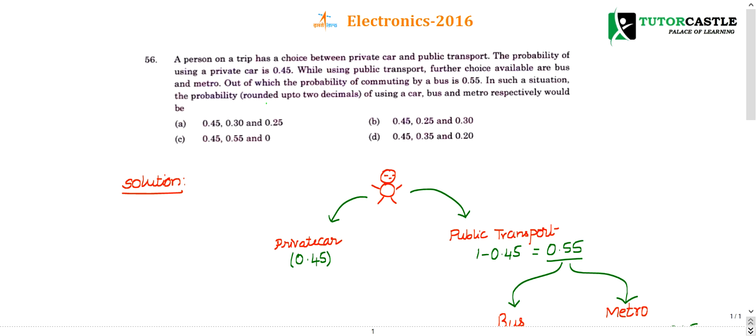Question number 56. The question may look a little lengthy but it hardly takes 30 to 45 seconds to finish this problem. It's a basic aptitude question. A person on a trip has a choice between private and public car.